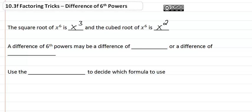A difference of sixth powers may be a difference of squares or a difference of cubes. What we use to determine that is the numbers in our polynomial to decide which formula to use. So let's look at some examples.